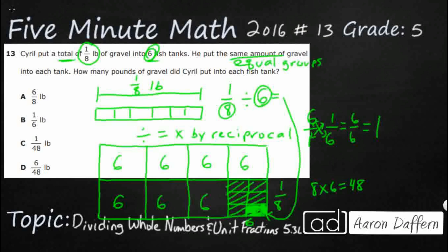And so we can actually use that here. Instead of one eighth divided by six, we can do one eighth multiplied by its reciprocal, one sixth. That's actually what we did. We got one forty-eighth. That's what this little guy is right here. One forty-eighth of a pound. Our answer is C.